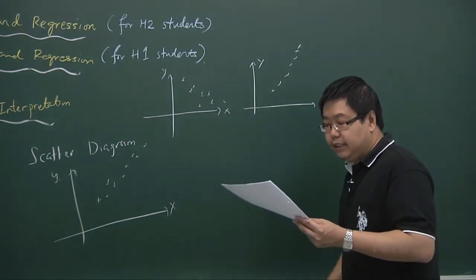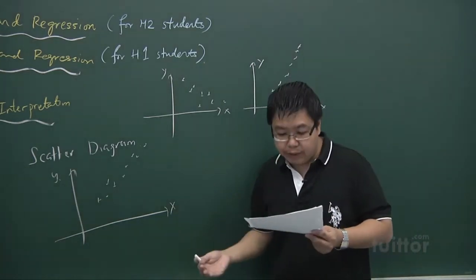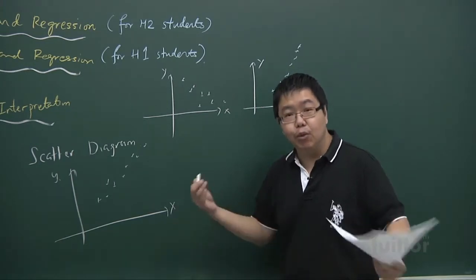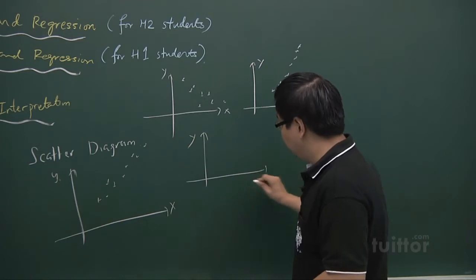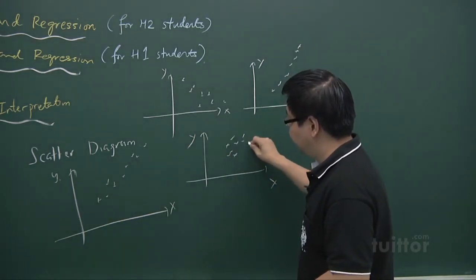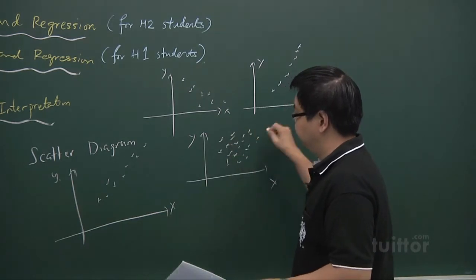And secondly, it gives you the form of the relationship, whether it is a linear relationship, quadratic relationship or curve or there is no clear relationship. It could be something in this manner, or scattered everywhere.